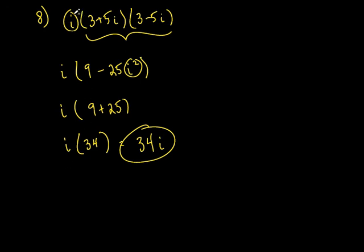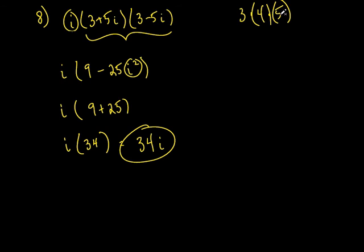A mistake a lot of people make is taking this i and trying to distribute it through everything inside both parentheses. No — you only take this i and multiply it by one of these things. Think of it like 3 times 4 times 5: you don't distribute that 3 through everything. You go 3 times 4 equals 12, then 12 times 5. So if you were going to distribute the i, you distribute it through one parenthesis and then take that answer and multiply by the other. But I think the way we did it is easier.